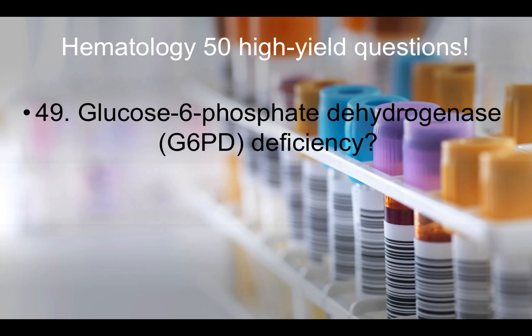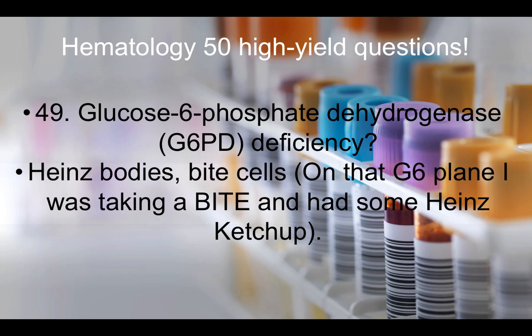Question forty-nine: Glucose-6-phosphate dehydrogenase, or G6PD deficiency, is associated with Heinz bodies and bite cells. The mnemonic: on a G6 plane — fancy private plane — I was taking a bite and got Heinz ketchup on my shirt. So Heinz bodies and bite cells for G6PD.